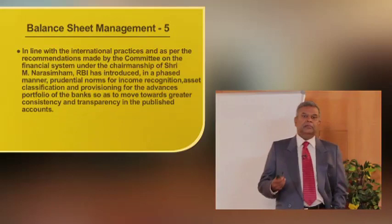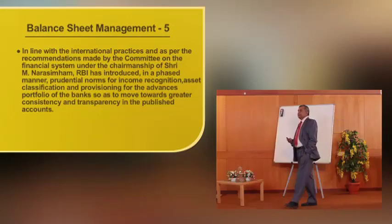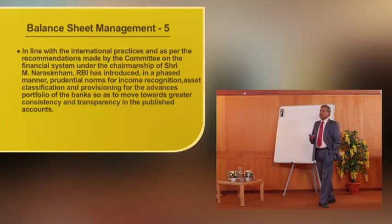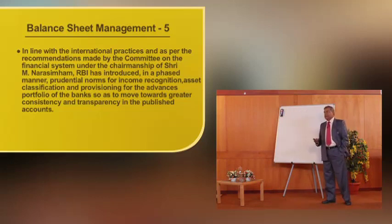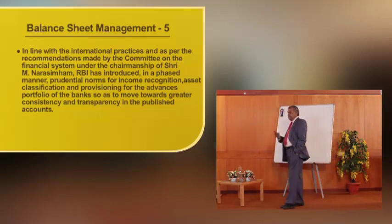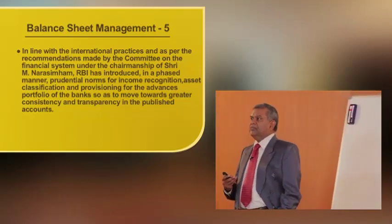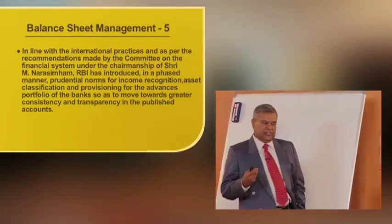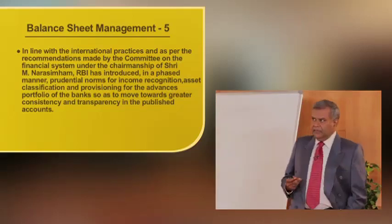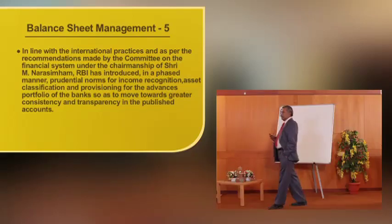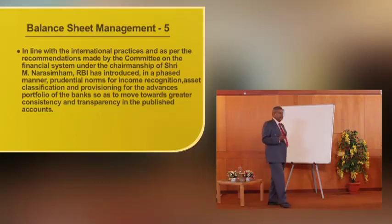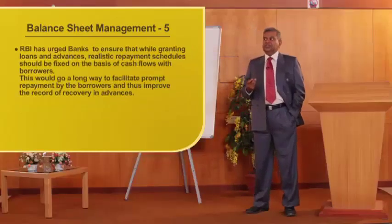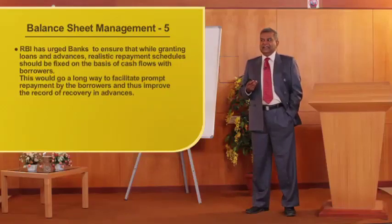In line with international practices, these NPA classifications follow recommendations made by the Committee on Financial System, famously called the Narasimham Committee number one. RBI introduced in a phased manner prudential norms for income recognition, asset classification, and provisioning for the advances portfolio of banks, so as to move towards greater consistency and transparency in published accounts. When an account becomes NPA, the chances of recovery become very remote, and RBI says that provisioning — called an impairment provision — is to be done.